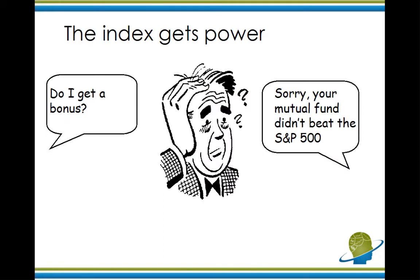So now this index starts to get power. Let's say you manage a mutual fund, and your mutual fund buys and owns and trades stocks similar to what's in the US stock market or the S&P 500. Depending on how you do relative to the index determines whether you get a bonus. So if you beat the S&P 500, you might get a bunch of money; if you don't, maybe you don't get as much. Over time, this index becomes very important to a lot of mutual fund managers' paychecks, so they're obviously trying to beat the index. But if you do a little bit of Googling and research, you'll find that maybe on average, 10% of fund managers can do better than the S&P 500.